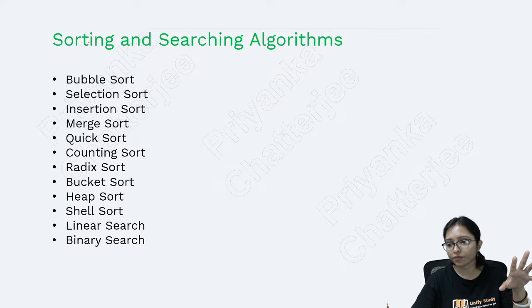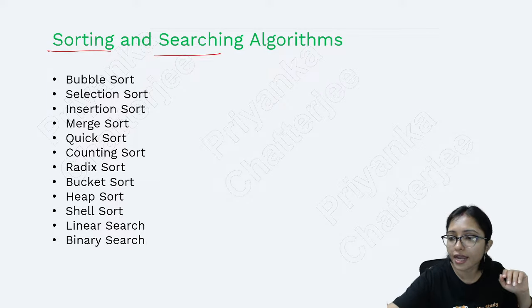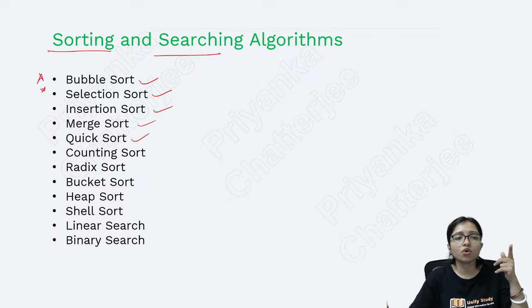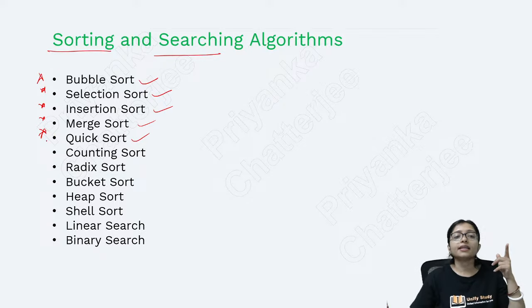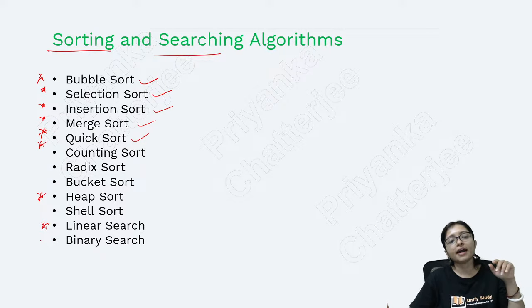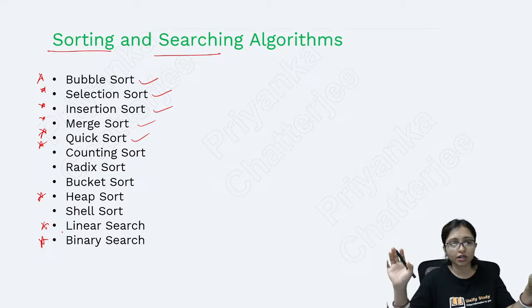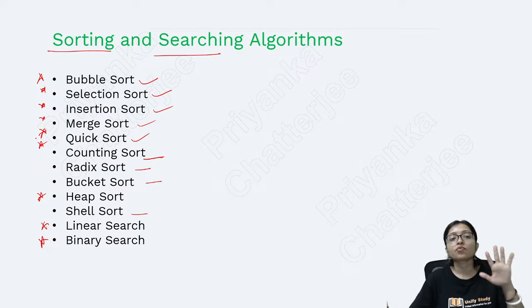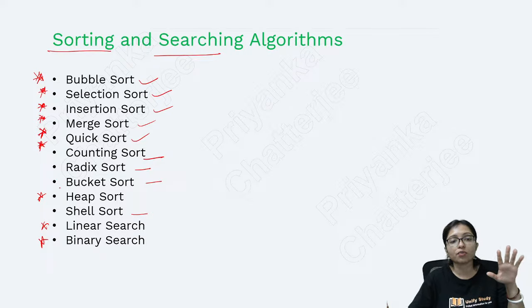Different types of algorithms are very important: greedy algorithm, dynamic programming algorithm. The searching and sorting algorithms are also critical. All types of sorting: bubble sort, selection sort, insertion sort, merge sort, quick sort - these are the most important sorting algorithms you must learn. Also heap sort, linear search, binary search. Other sorts like counting sort, radix sort, bucket sort, shell sort are also there but the ones I mentioned are the star topics.